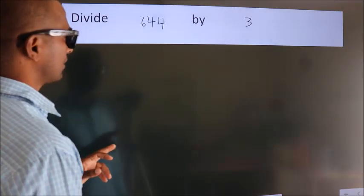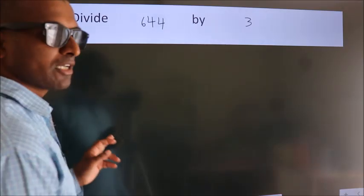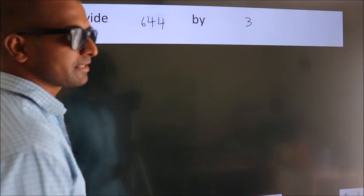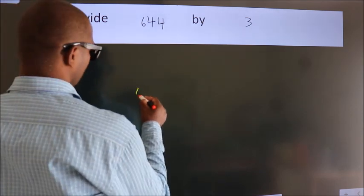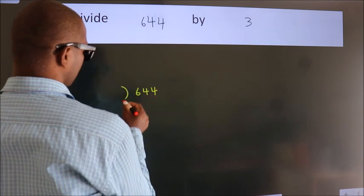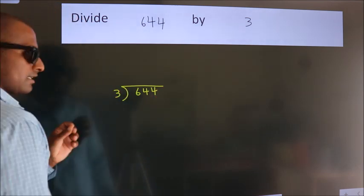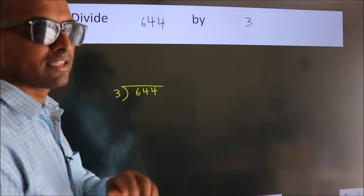Divide 644 by 3. To do this division, we should frame it in this way. 644 here, 3 here. This is your step 1.